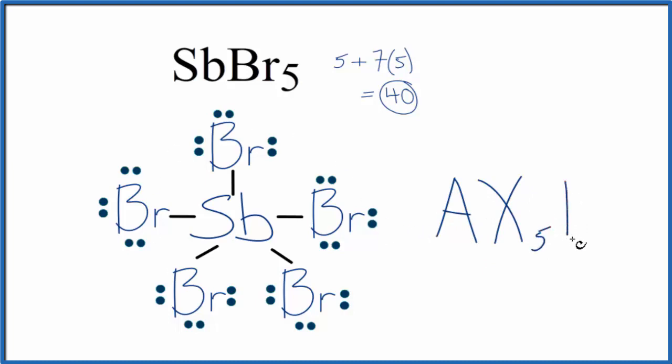And then E, those are the lone pairs. We don't have any lone pairs bonded to the bromine. These are all bonds here, so we're going to call that 0. If you look up AX5, you'll find out that it's trigonal bipyramidal, just like we found before.